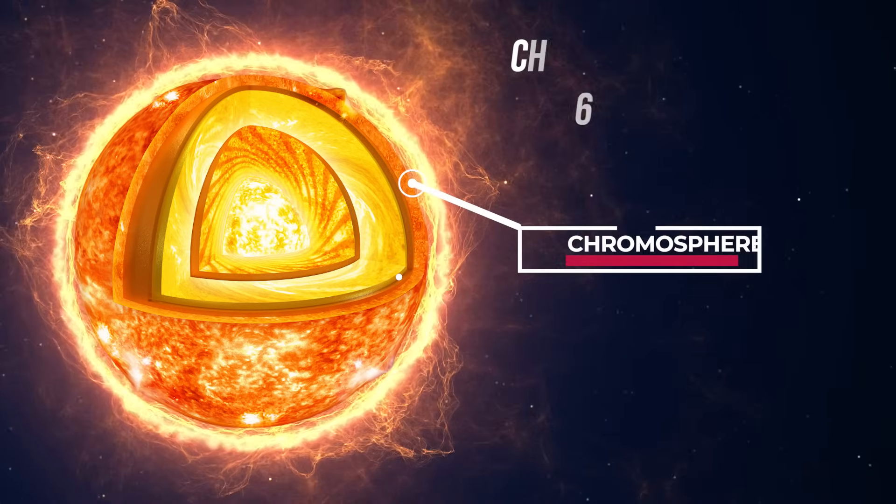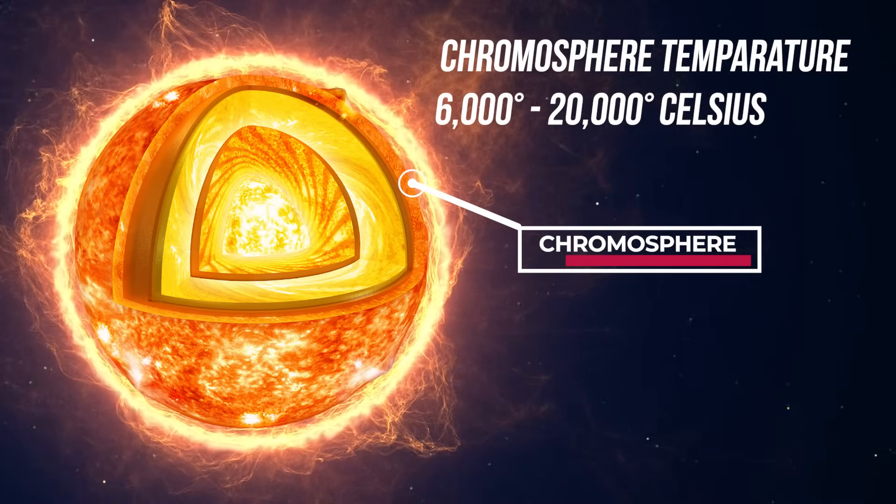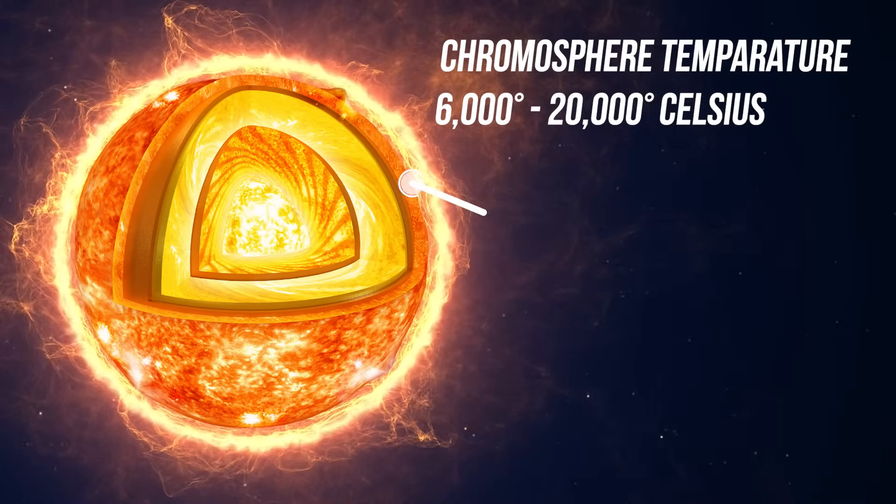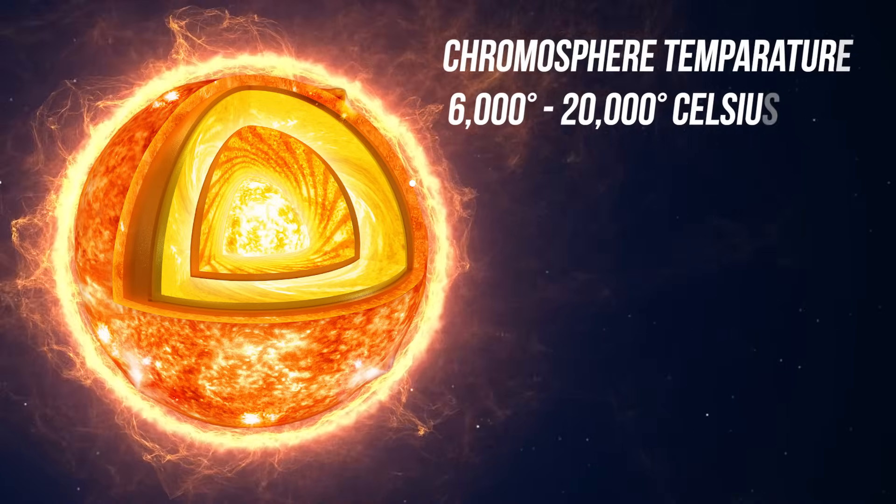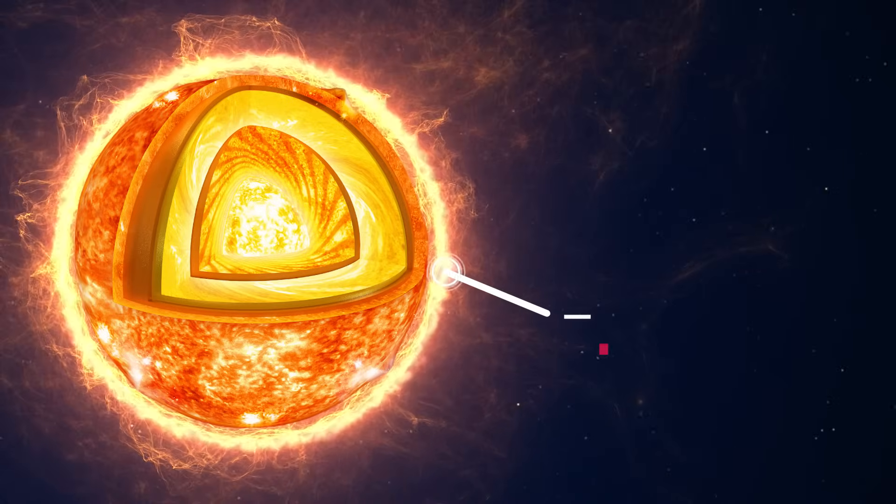Above the photosphere, there is a layer called the chromosphere, where temperatures can range from approximately 6,000 to 20,000 degrees Celsius.